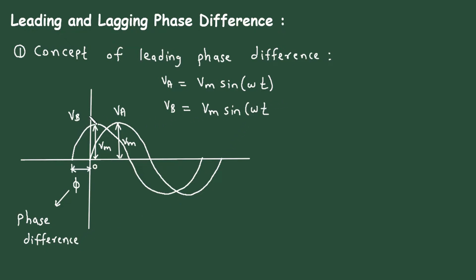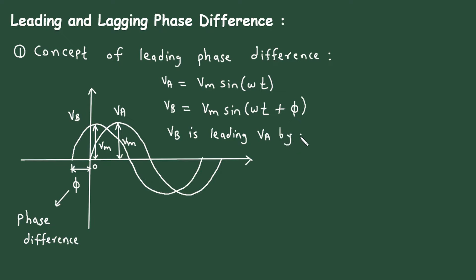So the equation for Vb is Vm sin(ωt + φ). For these waveforms, we can say that Vb is leading — Vb is leading Va by phase difference φ. This is the concept of leading phase difference.